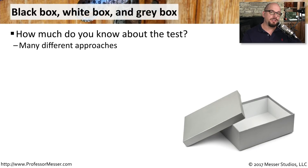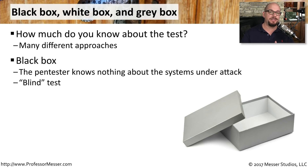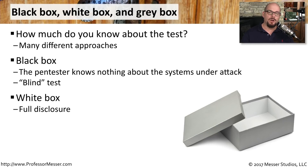If you're contracting with a third party to provide a penetration test, there are different levels of information you can provide before they begin testing. One method is a black box test — the penetration testing team has no idea about the systems or the network, starting with relatively no information and building out maps to figure out what types of systems they may be attacking. The polar opposite is a white box test, where you give the penetration testers all information about your operating systems, your network, and your services, and they jump right to exploiting vulnerabilities.